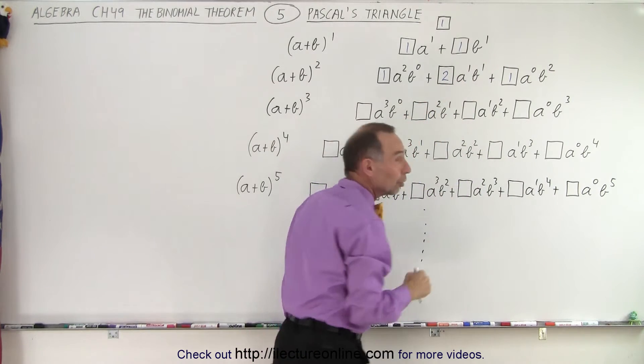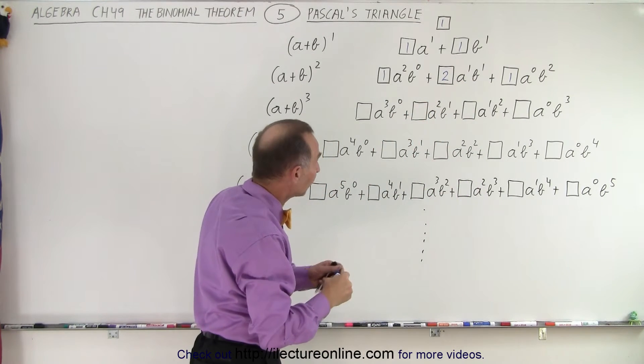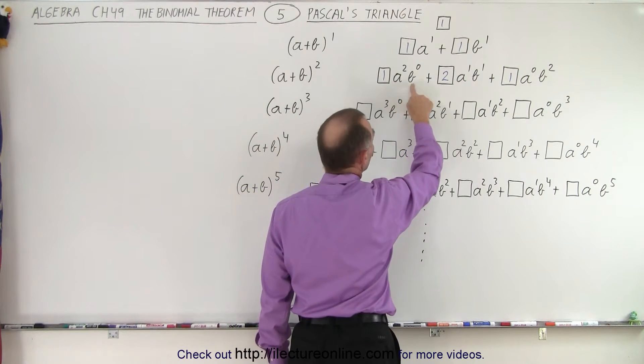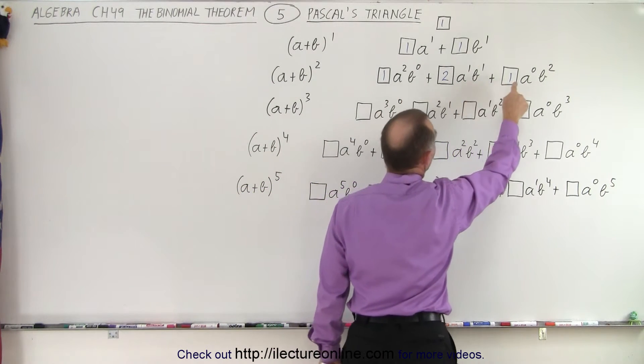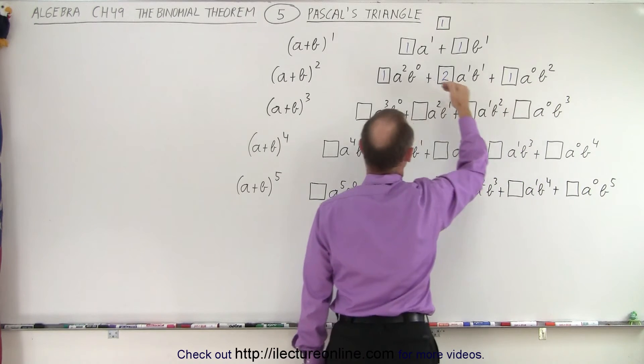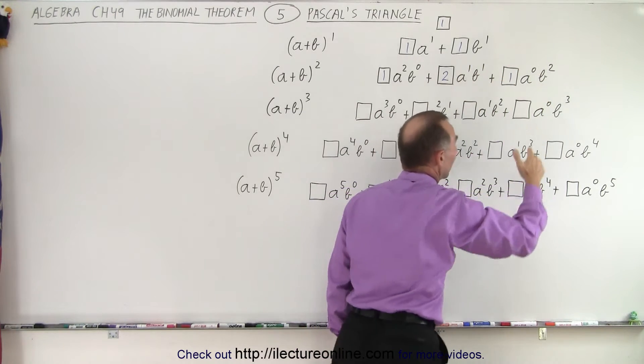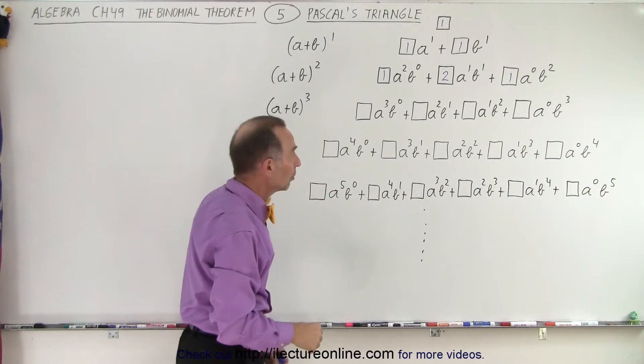Also notice that I included the to the 0 power for the exponents, so you can see that we have a squared, b to the 0, a to the first, b to the first, a to the 0, b squared. So we start with second power, first power, 0 power. Here we have 0 power, first power, second power. That's the pattern for the exponents.